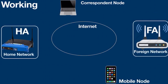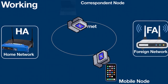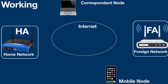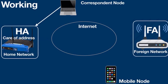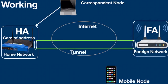Let's see how Mobile IP works. For example, the correspondent node sends data to the mobile node. Data packets contain the correspondent node's source and destination address. The packets reach the home agent, but now the mobile node is not in the home network — it has moved into the foreign network. The foreign agent sends the care-of address to the home agent, indicating where all packets should be sent. A tunnel is then established between the home agent and the foreign agent. The home agent encapsulates the data packets into a new packet in which the source address is the home address and the destination is the care-of address.